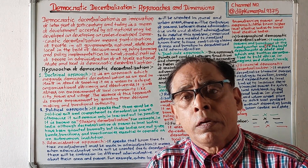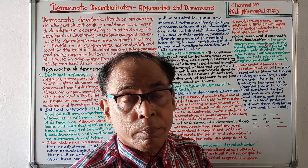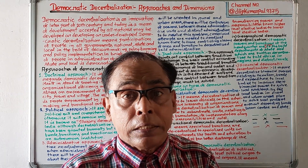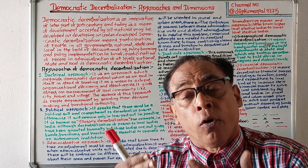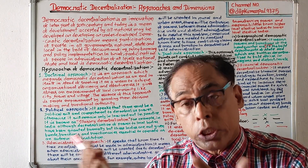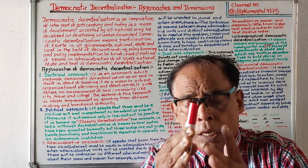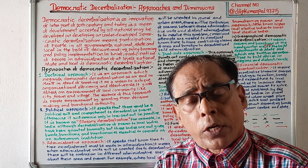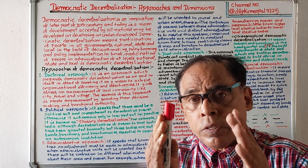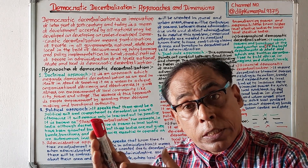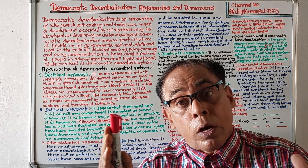Before I start my video on democratic decentralization approaches and dimensions, I want to inform viewers that my channel name is at the rate Dilip Kumar Pal 9375. If you search this channel in Google, you'll find more than 460 videos relating to plus two first year political science, plus two second year political science, plus three political honors, environmental studies, ethics and values, and general elective papers.